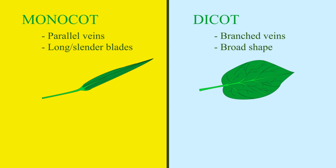The true leaves of monocots and dicots are also different. While monocots have leaves with parallel veins and long, slender blades, dicots have broader leaves with branched veins.